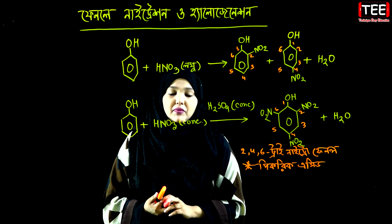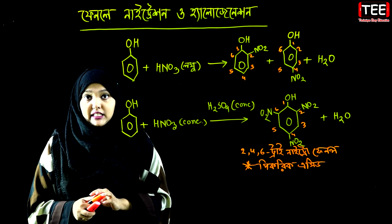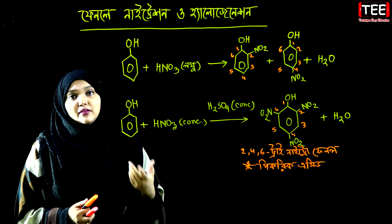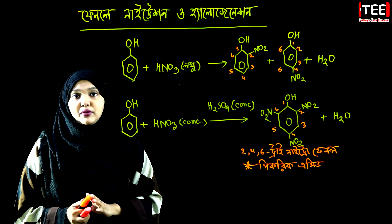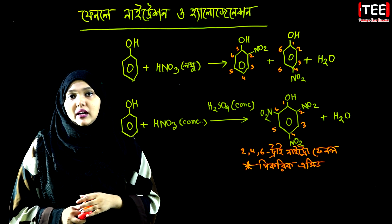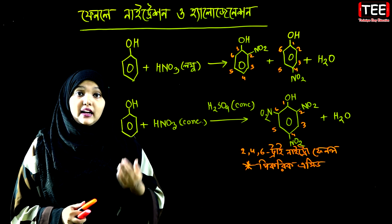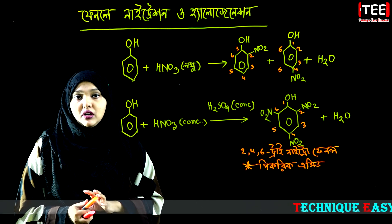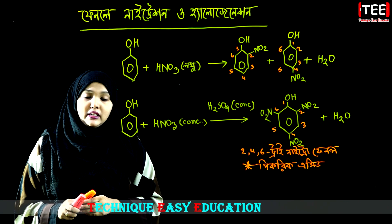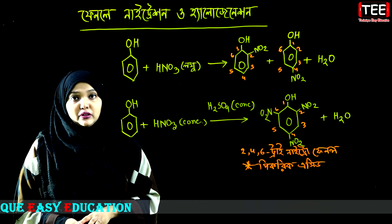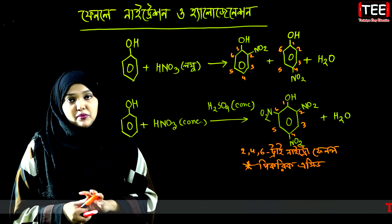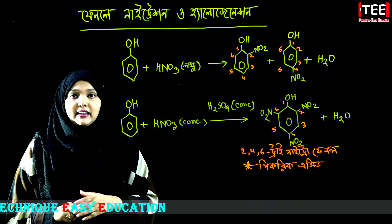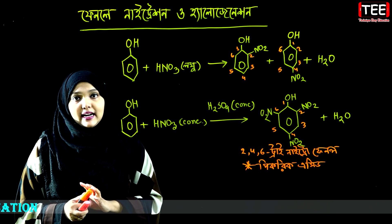Phenol halogenation — halogen reacts with phenol. This is a halogenation reaction. In this case, at positions 2, 4, and 6, we get 2,4,6-tribromophenol. When three positions — ortho, and para — have three bromine atoms added, 2,4,6-tribromophenol is formed.